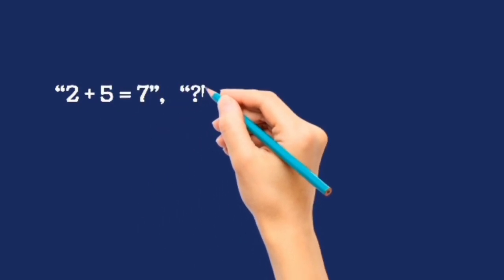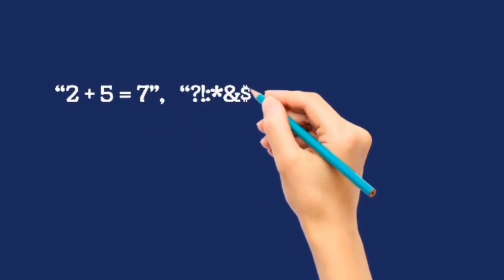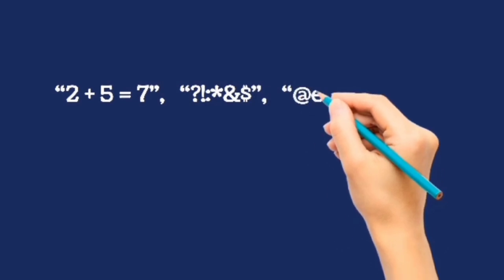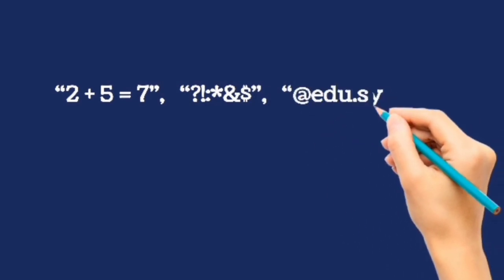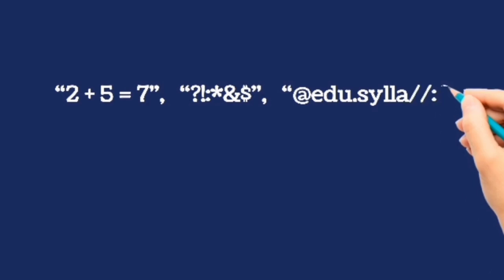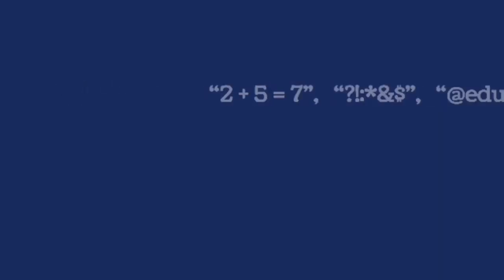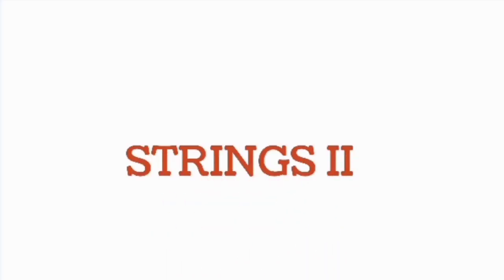2 plus 5 equals 7 in inverted commas. Question mark, exclamation, asterisk, and other signs in quotation marks are also strings. Together with the last one which is period. It's also a string because they are in quotation marks.